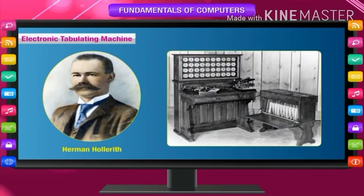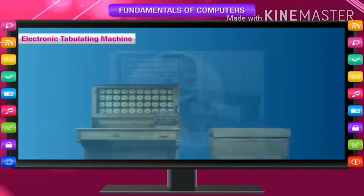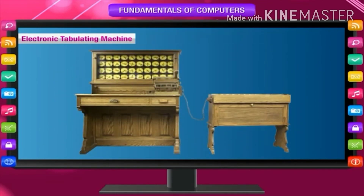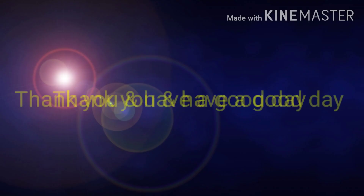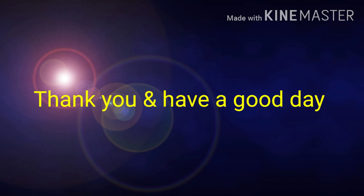Electronic Tabulating Machine: In 1890, Herman Hollerith invented a tabulating machine to work on population data. It used punch cards and could read data, process it, and give accurate results. He started a company which later became popular as International Business Machines, or IBM. Thank you and have a good day.